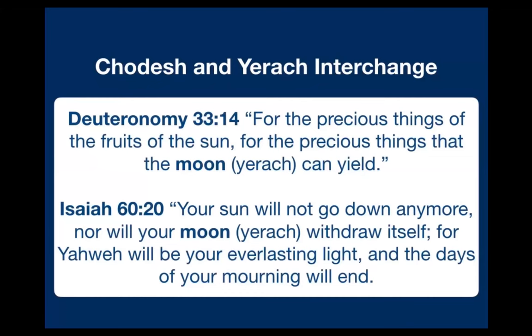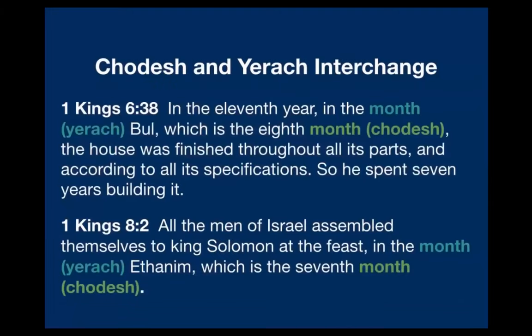Deuteronomy 33:14: 'for the precious things of the fruits of the sun, for the precious things that the moon — yerach — can yield.' Isaiah 60:20: 'your sun will not go down anymore, nor will your moon — yerach — withdraw itself, for Yahweh will be your everlasting light.' Since hodesh can be used interchangeably with yerach, we can know for certain that hodesh refers not just to any month — like January or February — or to a solar month, but specifically to a lunar month. Otherwise it could not be used interchangeably with yerach, a word that means moon.